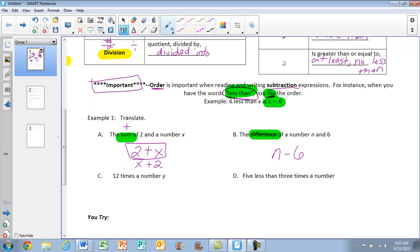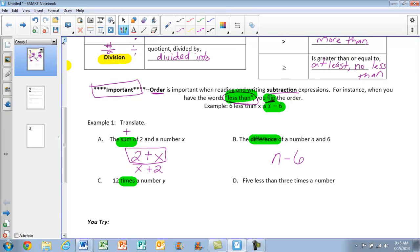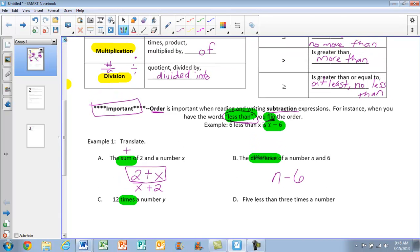The next one, 12 times a number y. If we look back into our keywords, times is multiplication. So 12 y is what we're looking for. If you put 12 times y, yes, that would be correct. But this is the more high school algebraic expression we're looking for.